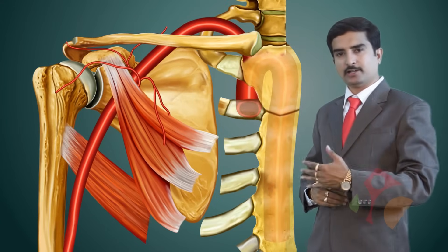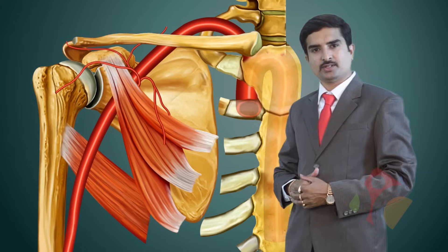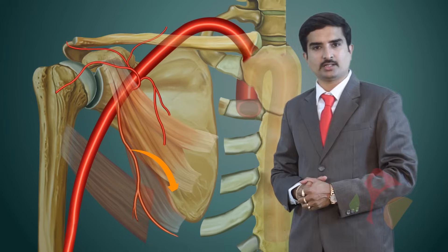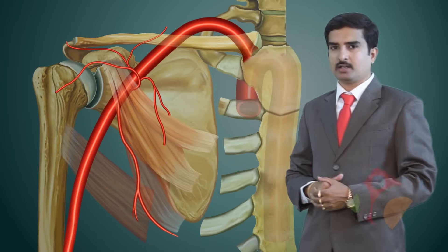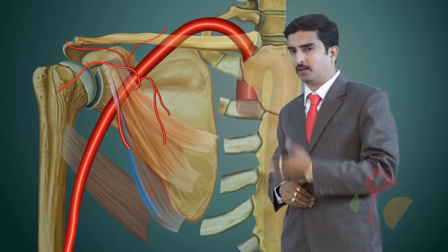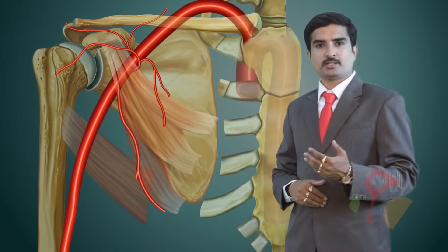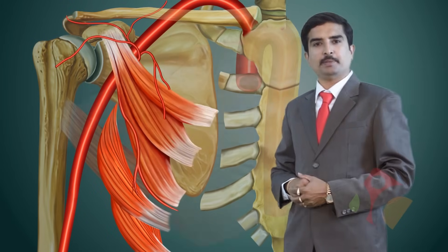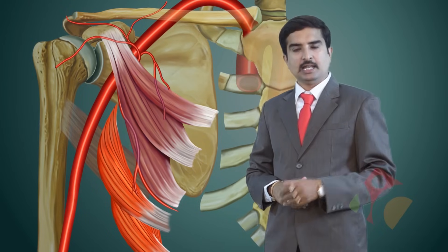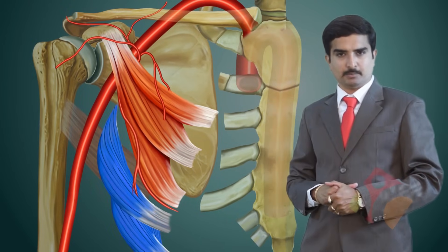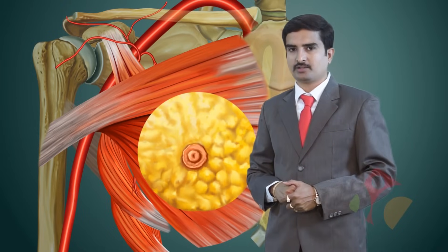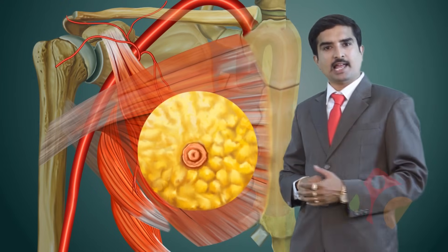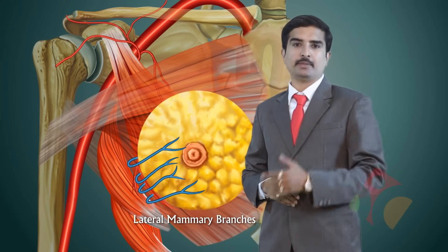The second branch from the second part of the axillary artery is the lateral thoracic artery. It arises from the inferior border of the pectoralis minor muscle, runs along the serratus anterior muscle, and supplies the pectoralis major, pectoralis minor, and serratus anterior muscles. In females, this lateral thoracic artery is larger and forms an important blood supply to the lateral aspect of the mammary gland through its lateral mammary branches.